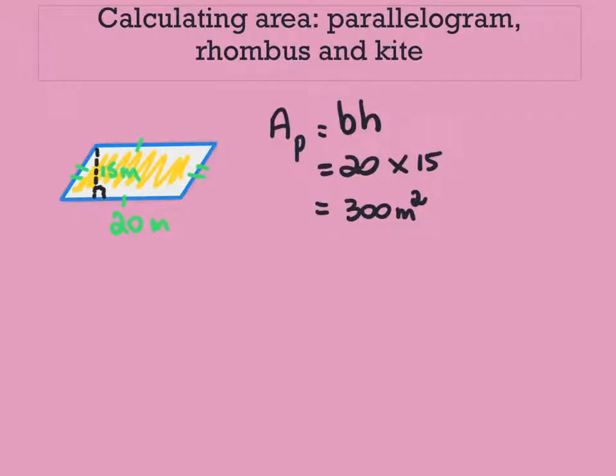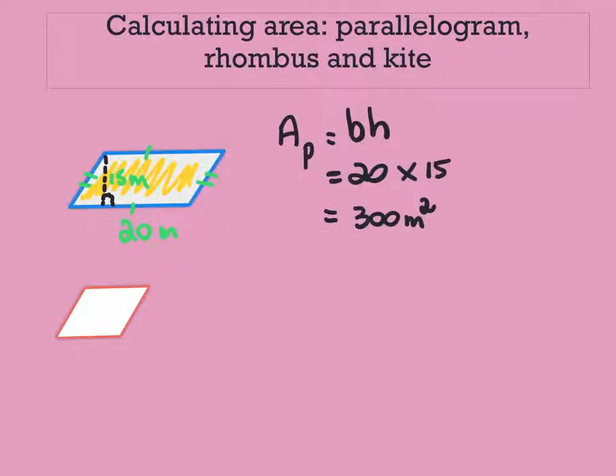Now let's have a look at our rhombus. A rhombus is basically a square that's sort of being pushed over and has two sides that are parallel and all sides have equal length. So here's our square.